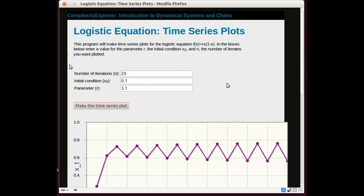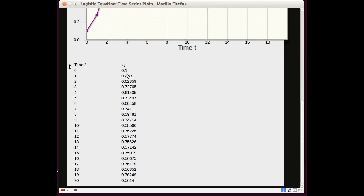Let's scroll down to the orbit or itinerary. I hope that these few numbers look familiar, that you calculated these with a calculator or perhaps a computer program of your own. So the initial condition or seed is 0.1 and then we get 0.279 and 0.62359.